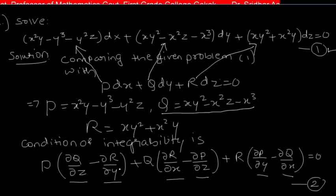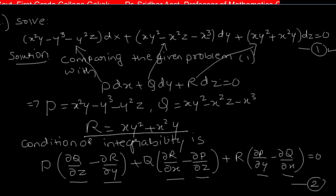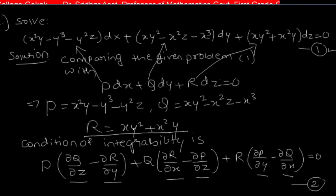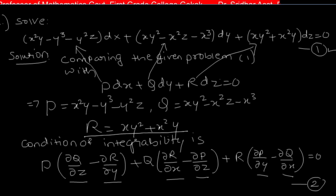Next, differentiating R = xy² + x²y with respect to y: the first term gives 2xy (x is constant, differentiation of y² is 2y), and the second term gives x². Therefore ∂R/∂y = 2xy + x².